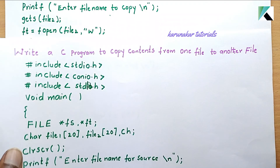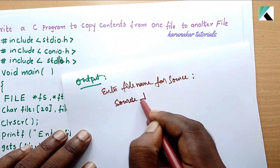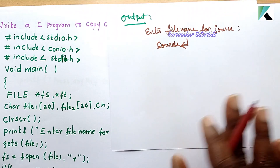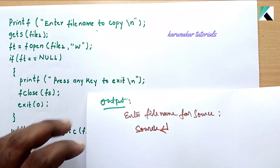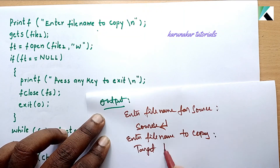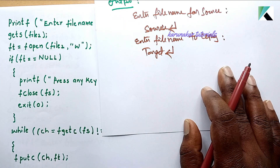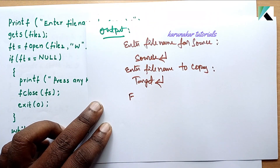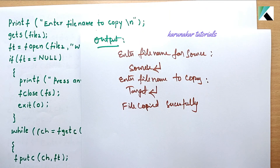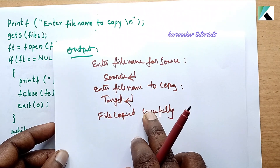Now let's see the output. First, enter file name for source — enter 'source'. Then enter file name to copy — enter 'target'. The program copies the source file to the target file successfully. This is the output of this program. Thanks for watching.